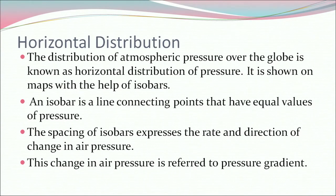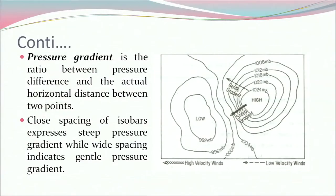Now let's understand the horizontal distribution. The distribution of atmospheric pressure over the globe is known as horizontal distribution of pressure. It is shown on the maps with the help of isobars. An isobar is a line connecting points that have equal values of pressure. The spacing of isobars expresses the rate and the direction of change in air pressure. This change in air pressure is referred to as pressure gradient. Pressure gradient is the ratio between pressure difference and the actual horizontal distance between two points. Close spacing of isobars expresses steep pressure gradient while wide spacing indicates gentle pressure gradient. The factors responsible for variation in the horizontal distribution of pressure are: air temperature, the earth's rotation, and pressure of water vapor.